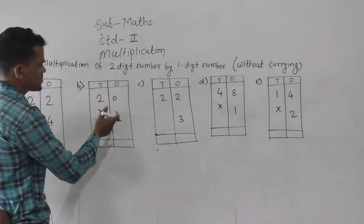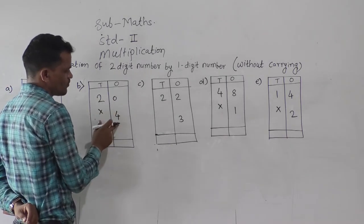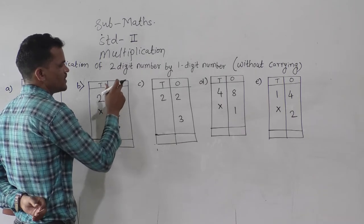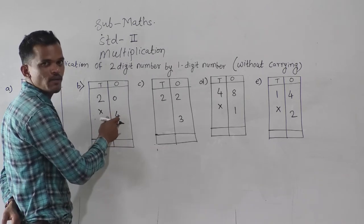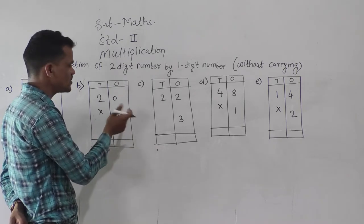Then next, 20 multiply by 4. First multiply the ones place digit by 4. You know any number multiplied by 0, the answer is 0. So 4 into 0 is 0, and 4 twos are 8.